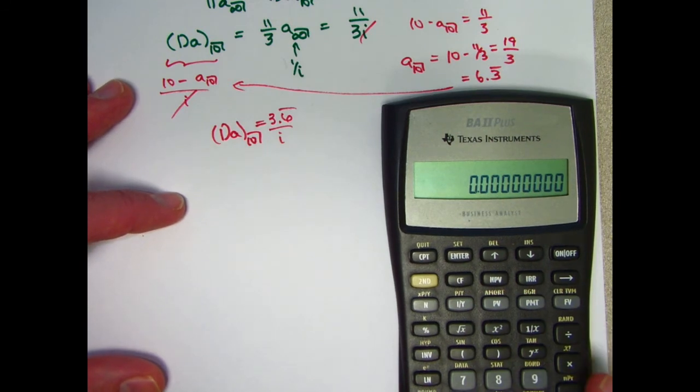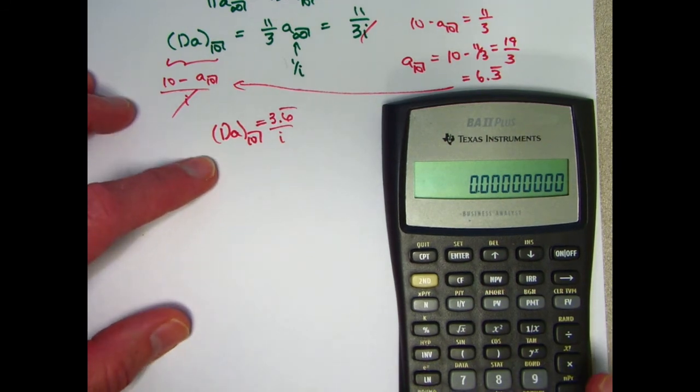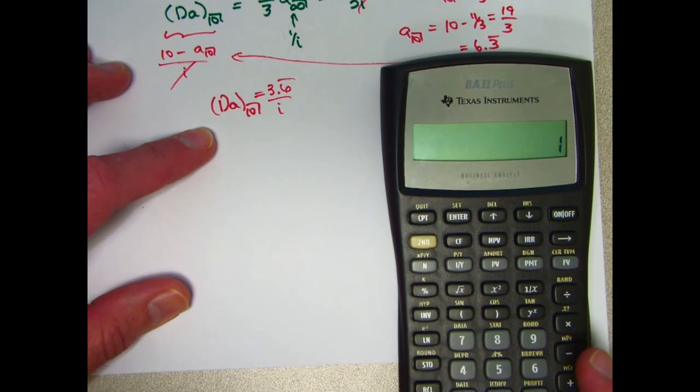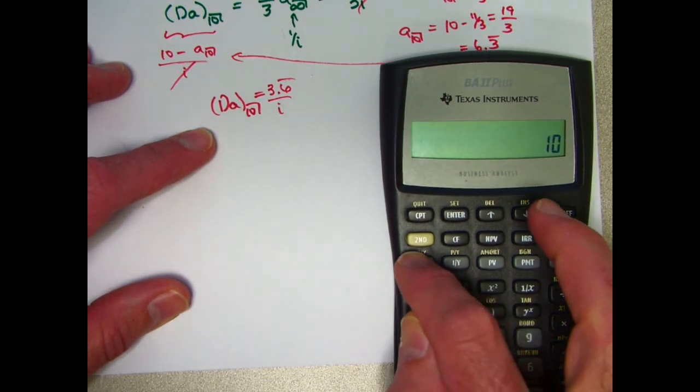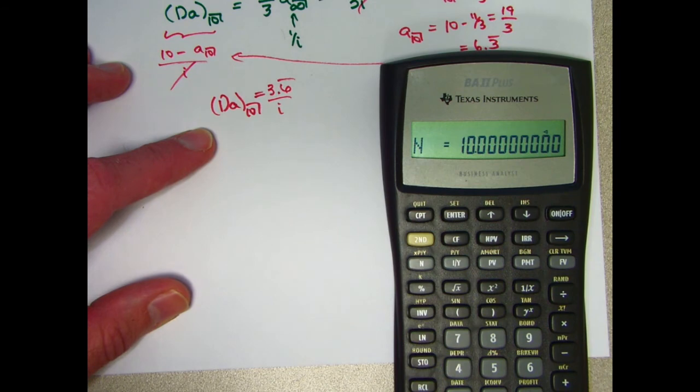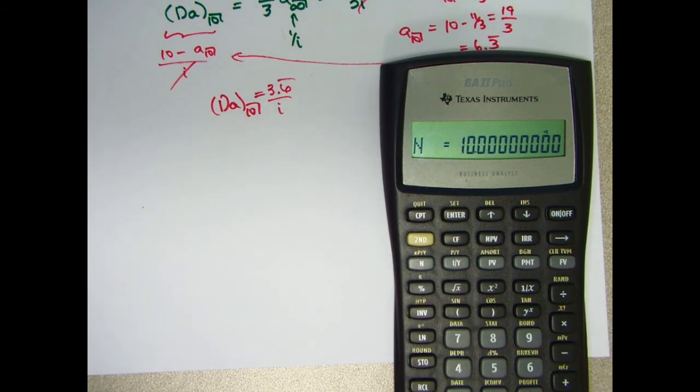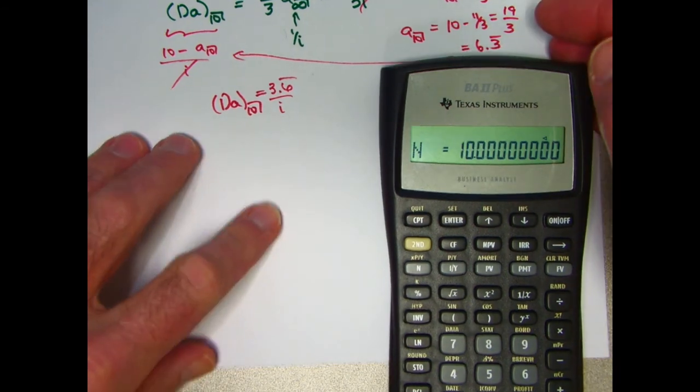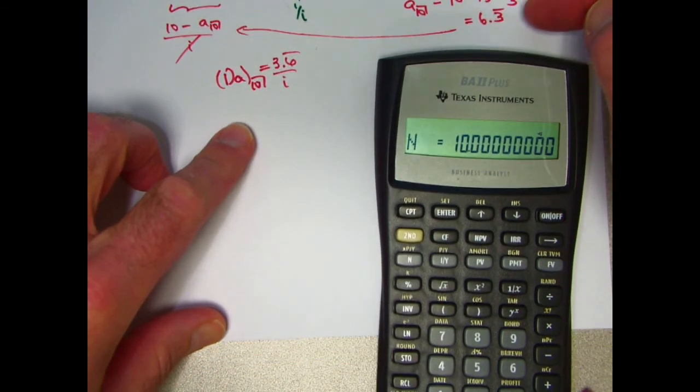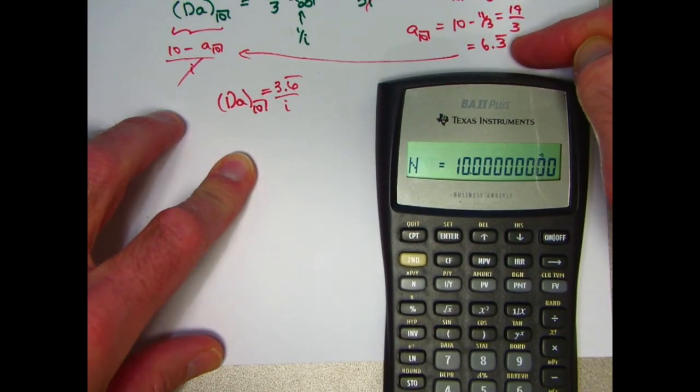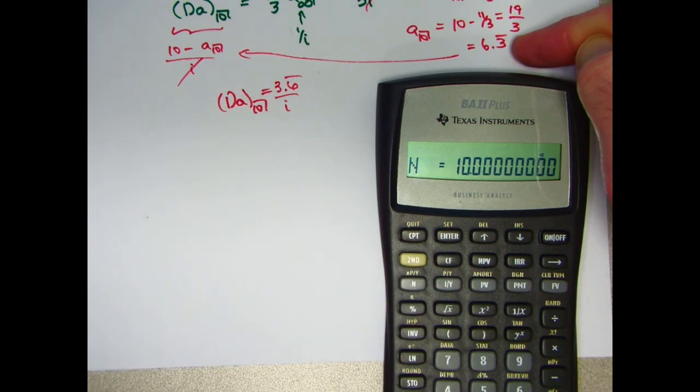We want to enter 10 for the number of payments, so I type 10 and press the N button. That's stored in N. I want to put the present value and the payments in for this standard level annuity. My goal is to solve this for i, this equation right here. And I want one of those to be negative. It really doesn't matter.